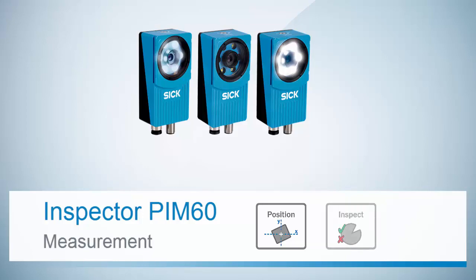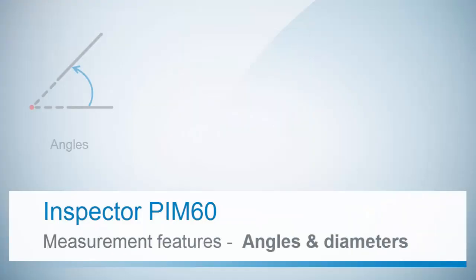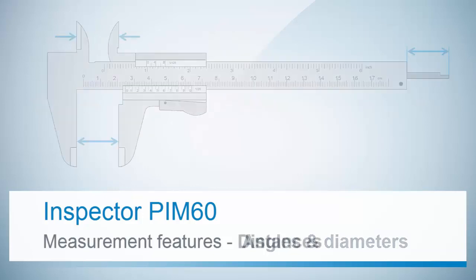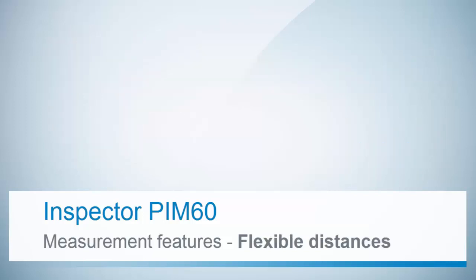The Inspector PIM60 vision sensor and measurement tools perfectly perform automated dimensioning of your produced parts. PIM60 measures angles and repetitive angles, diameters, distances like width, gaps, height, repetitive distances, and a wide range of flexible measurements.